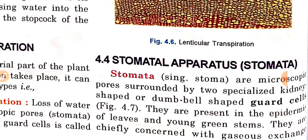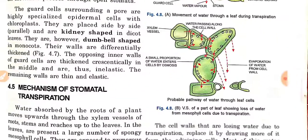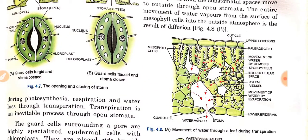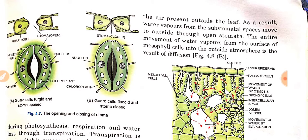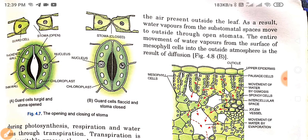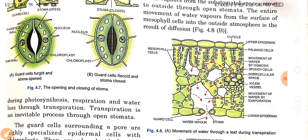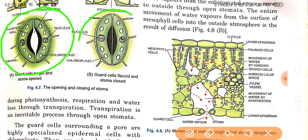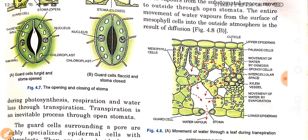Stomata are chiefly concerned with gaseous exchange. You can see in the figure the opening and closing of stomata. These are the guard cells; here the stoma is in open condition and here in closed condition. Guard cells turgid and stoma opens; guard cells flaccid and stoma closes.